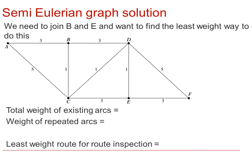If we look at the semi-Eulerian graph solution, in this case B and E are the odd nodes, of order 3. We want to find the least weight way to do this, to join them. So the total weight of the existing arcs would be 25. I'll leave you to use your calculators to check that while I'm talking.